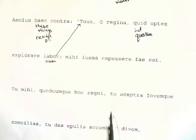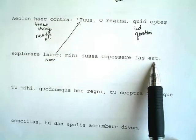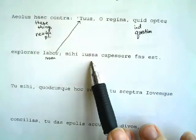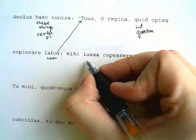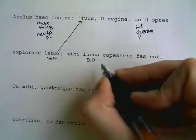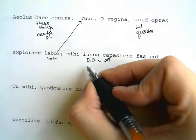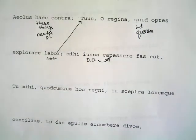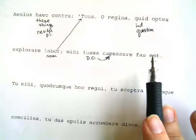Mihi iussa capessere fas est. Mihi — 'to' or 'for me.' Iussa are orders — it's a neuter word, so iussa is neuter plural, and here it is the direct object of our infinitive. Capessere is an uncommon verb meaning 'to perform.' So 'to perform the orders' — iussa is the direct object of capessere.